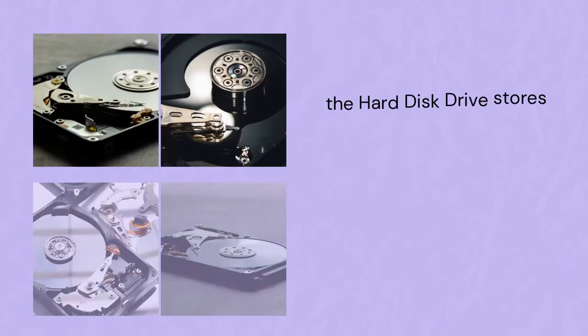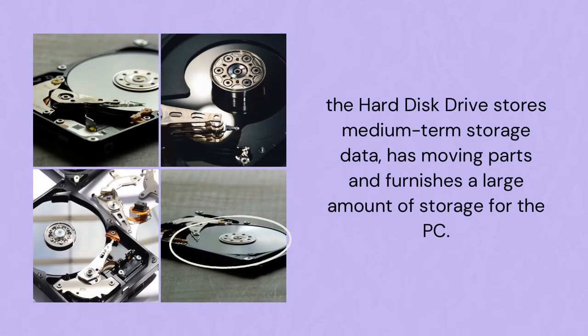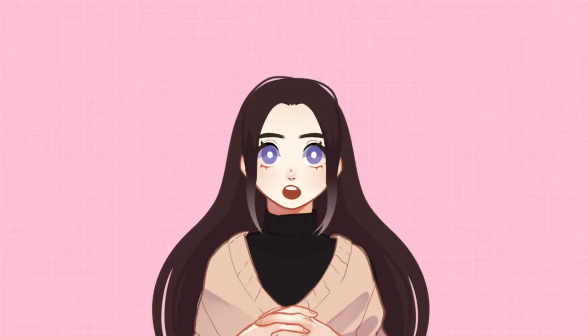We will go first with the hard disk drive. The hard disk drive stores medium-term storage data, has moving parts, and furnishes a large amount of data storage for the PC. The hard disk drive is what you often see inside a system unit of a traditional desktop computer setup.